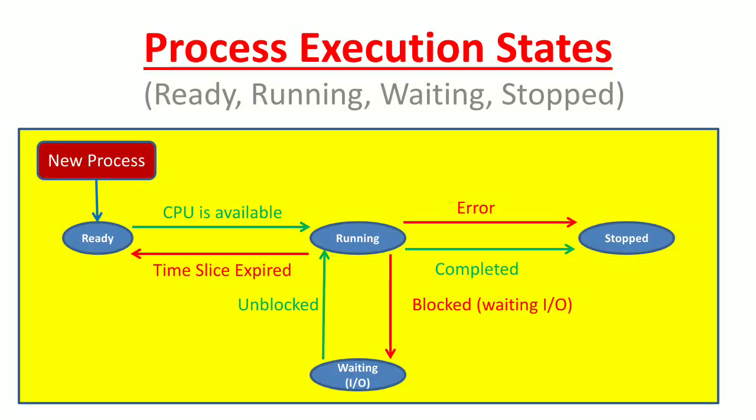A process is an instance of a program which is being executed by the operating system inside a computer memory. An operating system may implement various protection mechanisms to protect itself during runtime. Process execution or operational states is one kind of protection mechanism implemented by the operating system to protect itself or to protect applications from interfering with each other while these applications are being executed inside computer memory.